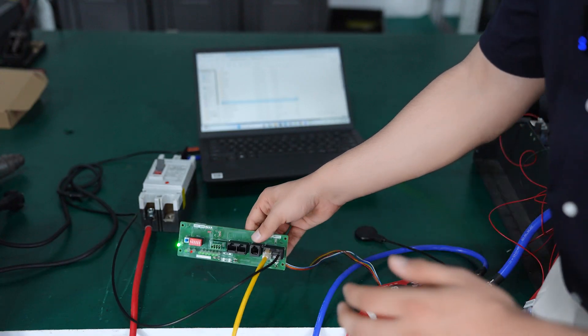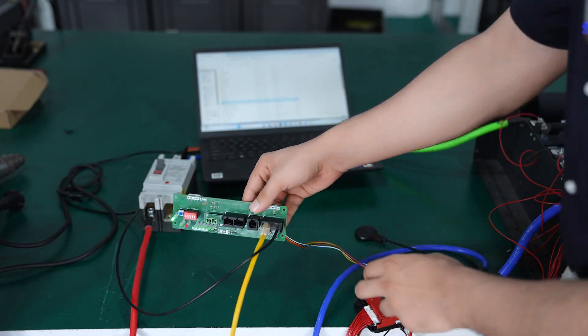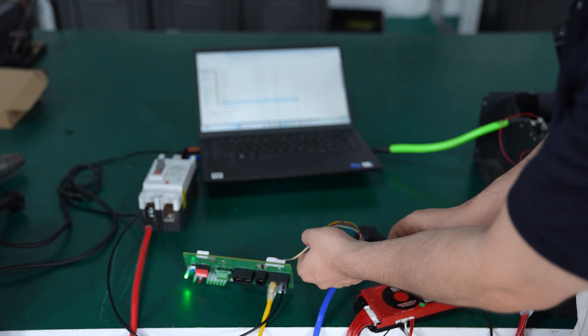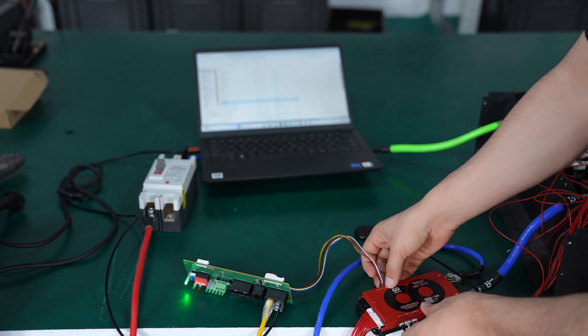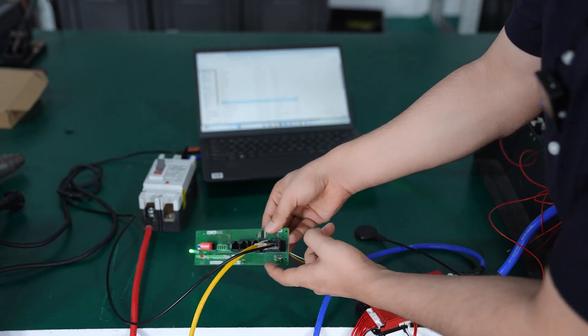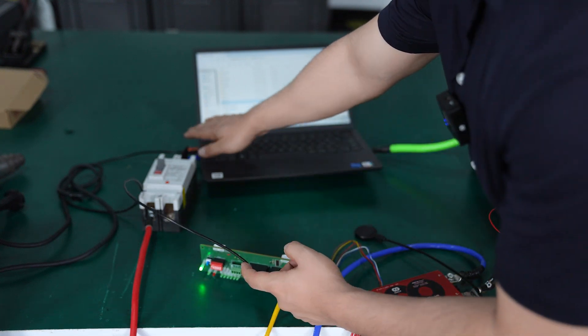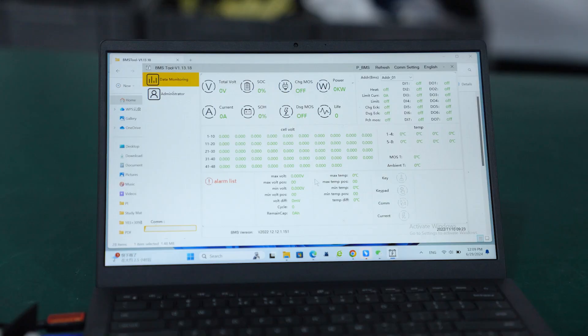The second method is to connect to the WNT port. You need to make sure the WNT port is correctly connected to the UART port of the BMS, and the RS485 port here is connected to your PC computer.